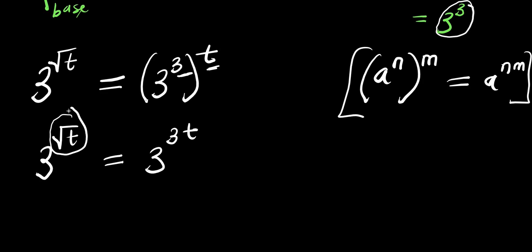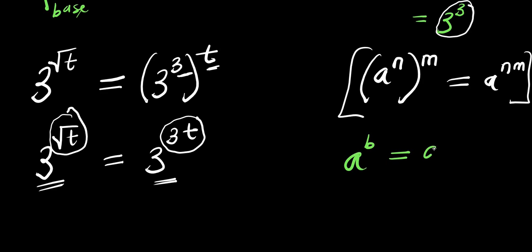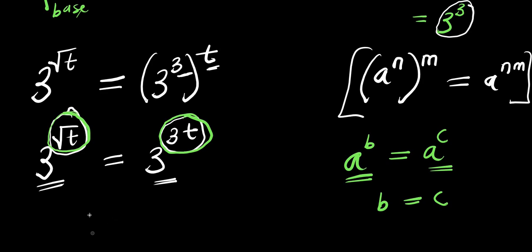Now the bases are the same. If you have a to the power of b equals a to the power of c, since the two bases are both a, that means you can say b equals c. So we can say that root t equals 3t.